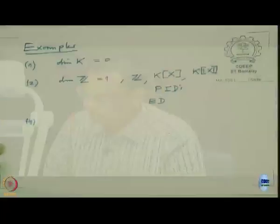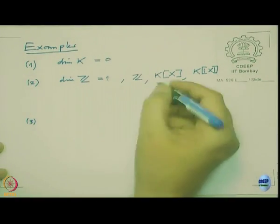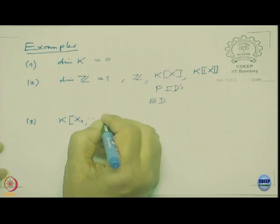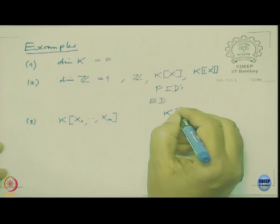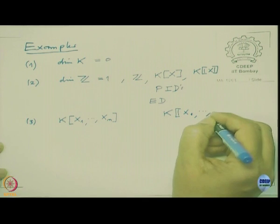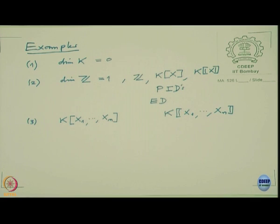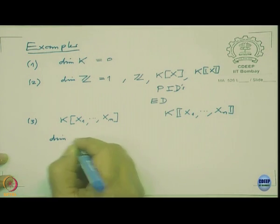This raises the question: what about K[X_1, ..., X_n], the polynomial ring in several variables, or the power series ring in several variables? This corresponds to what we study in analytic geometry as R^n or C^n, and the dimension we have been dealing with since school should be n. So the first result we will prove is that the dimension of these rings is n.